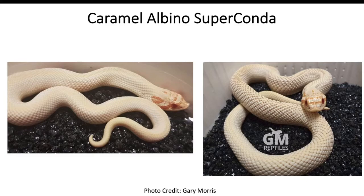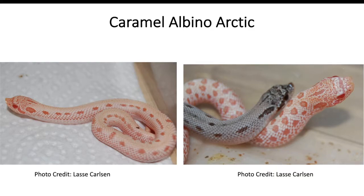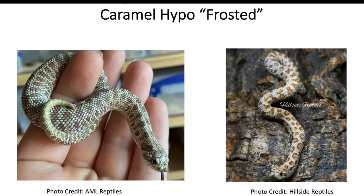On this slide we have the caramel albino arctic conda on the left-hand side — that combination with a reduced pattern — and on the right-hand side just the caramel albino arctic. For some reason I could not find a picture of just the caramel arctic. I'm pretty sure they have been produced, especially since we have these two specimens with the albino gene, but scouring the internet I was not able to find a picture of that combination.